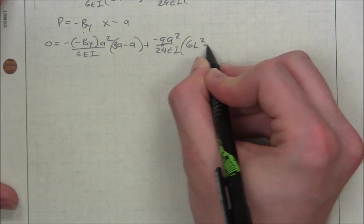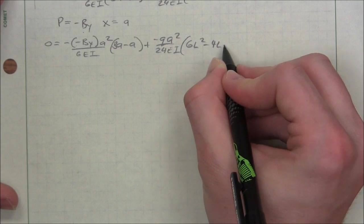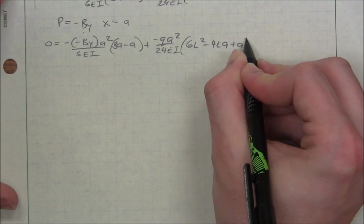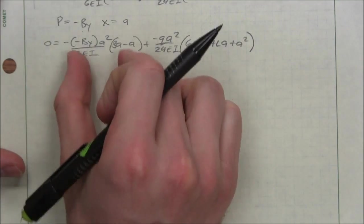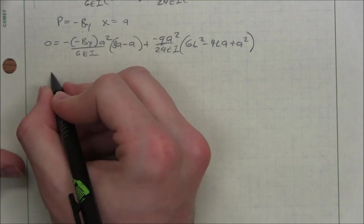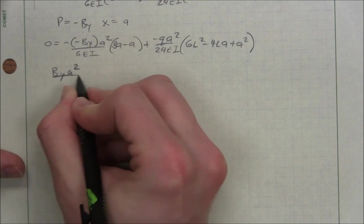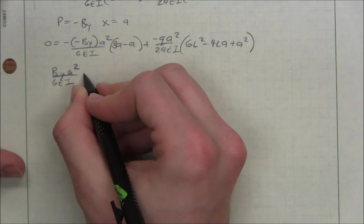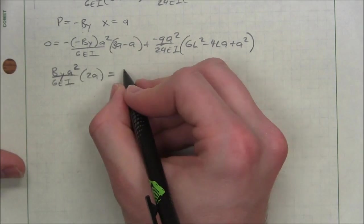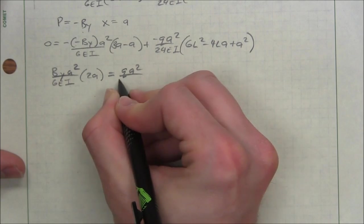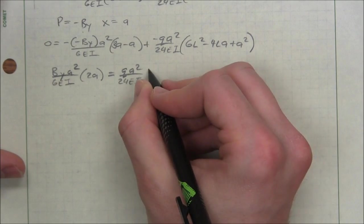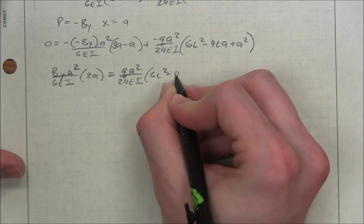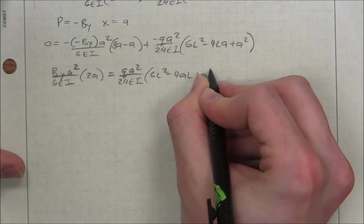I could put this term on the other side of the equation. So I have BY A squared, 6EI, 2A equals QA squared over 24EI, 6L squared minus 4AL plus A squared.